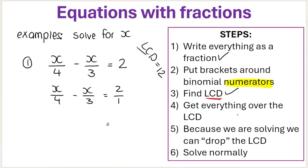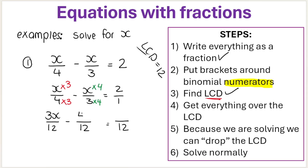Now we need to get everything over the lowest common denominator. I need each of these three fractions to be written over 12. What must I multiply 4 by to make it 12? Multiply by 3. What you do to the bottom you must do to the top. So 4 times 3 gets you 12, and x times 3 gets you 3x. For the next fraction, multiply 3 by 4 to get 12, so x times 4 is 4x. For the last fraction, multiply 1 by 12, so 2 times 12 is 24. Now all fractions are rewritten over the lowest common denominator.